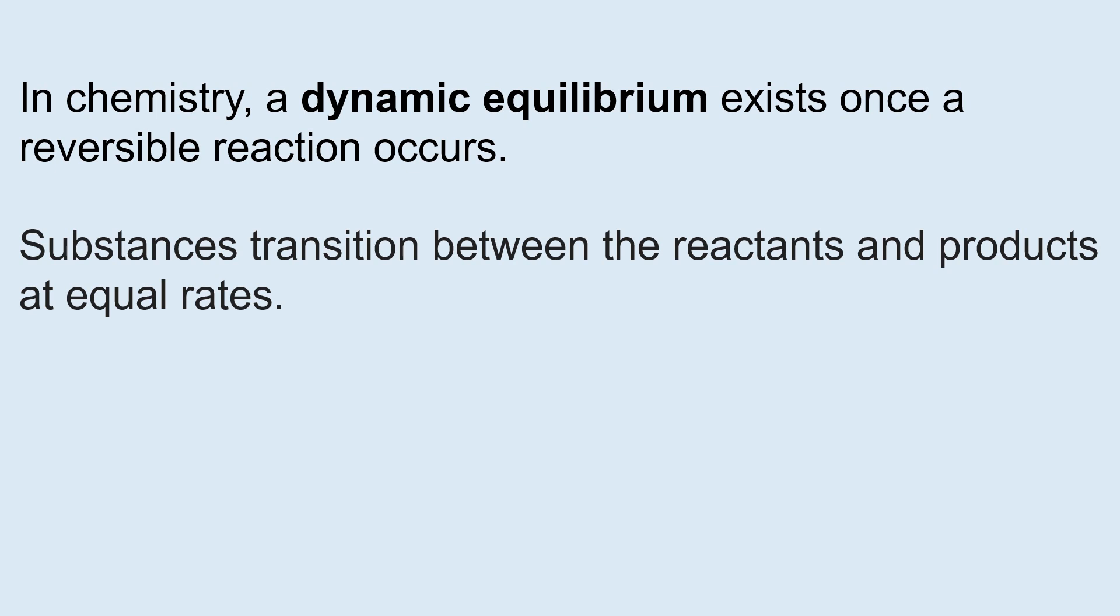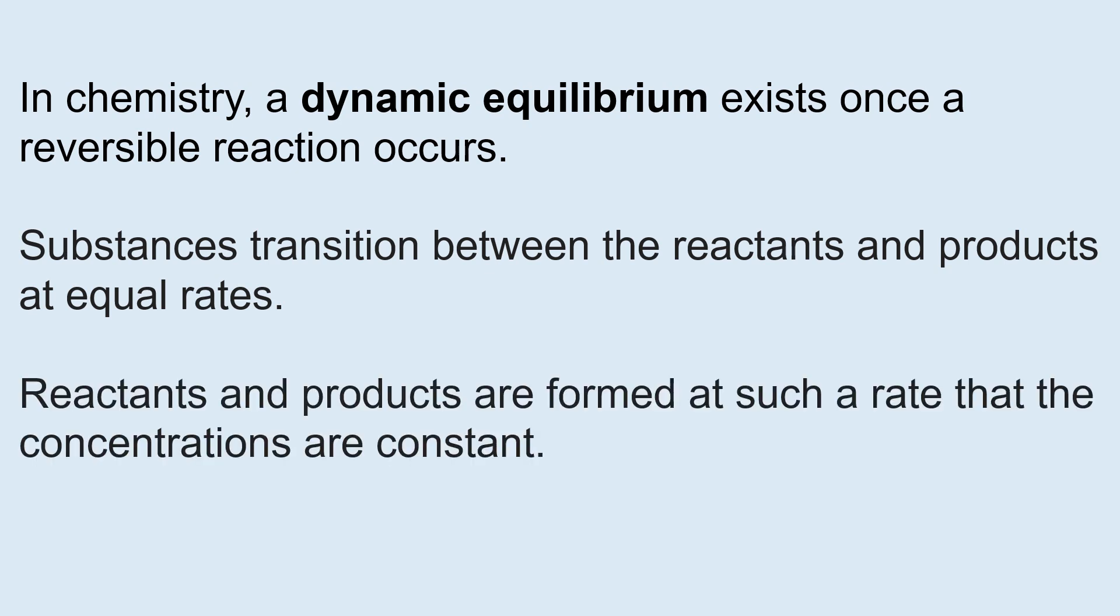Substances transition between the reactants and the products at equal rates. Reactants and products are formed at such a rate that the concentrations are constant.